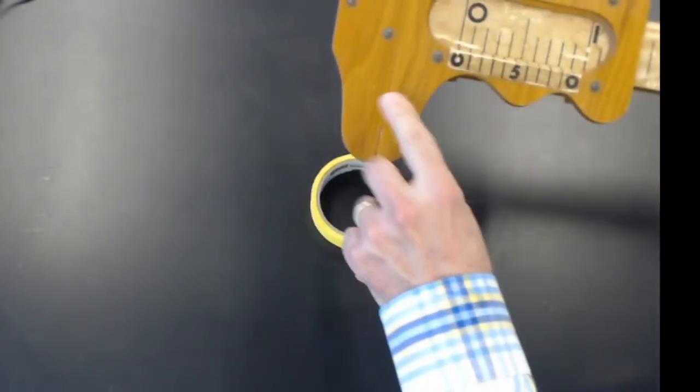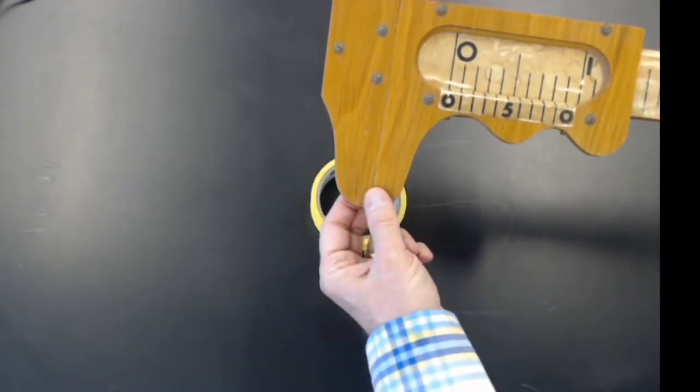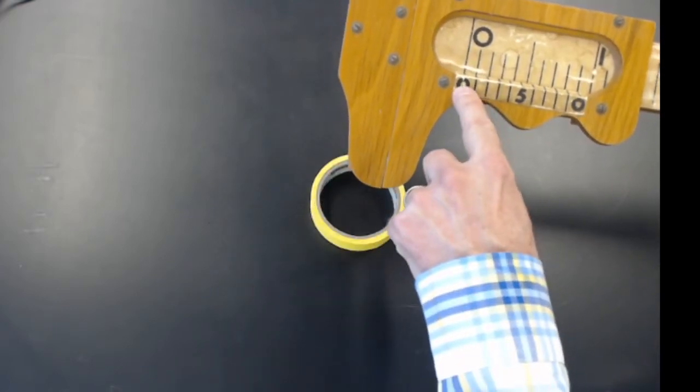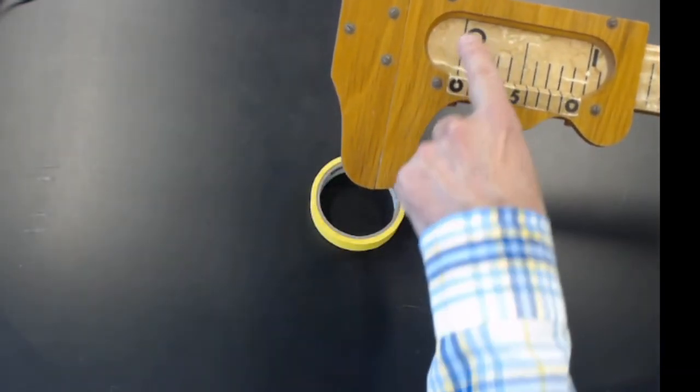You can see when the two fingers are together, zero on the bottom scale lines up at the top scale.